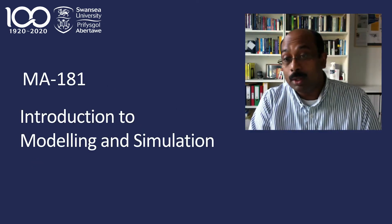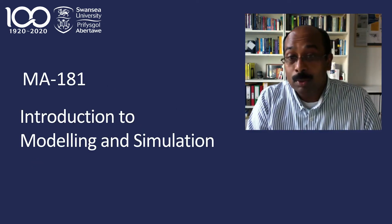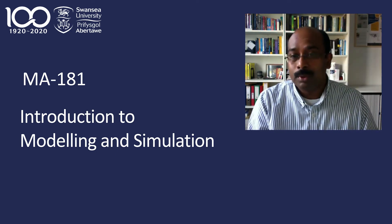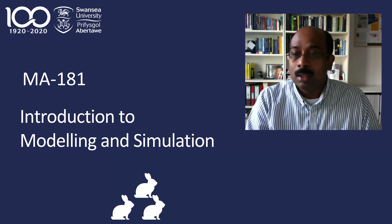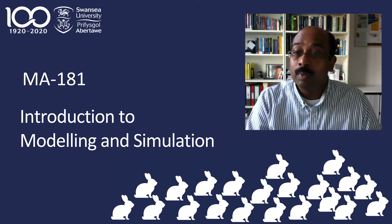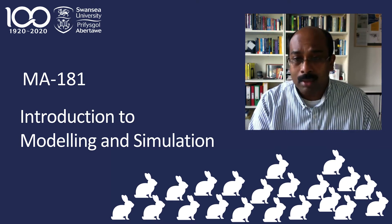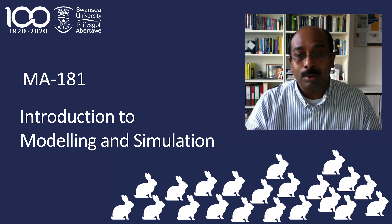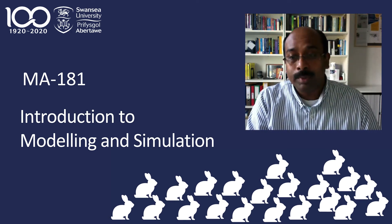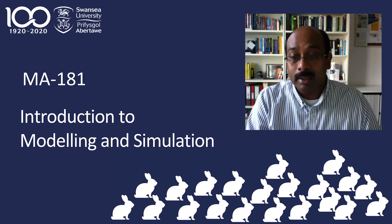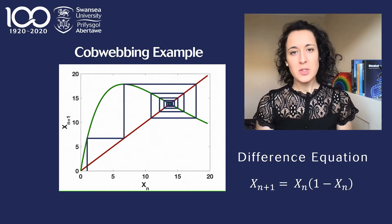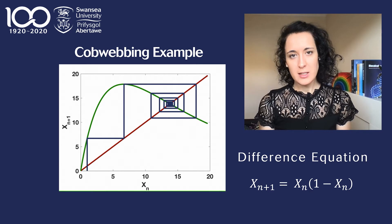The first module, Introduction to Modelling and Simulation, will provide an introduction to mathematical modelling and computer programming. Using real-world examples, such as a population growing under different conditions, we will talk about model design from mathematical thinking to equations and from algorithmic thinking to implementation into a computer program. We will cover basic analytical techniques and computational approaches to solve simple models. For example, we can use a graphical tool named cobwebbing to describe how our population evolves in discrete steps in time.